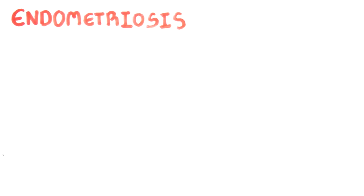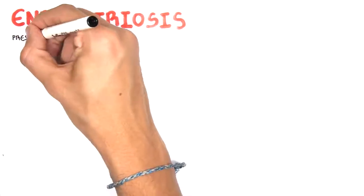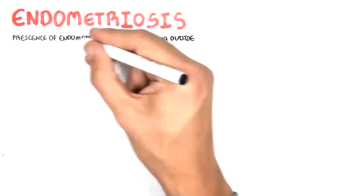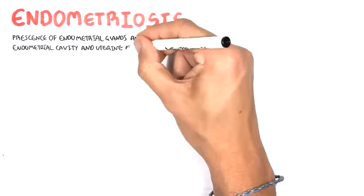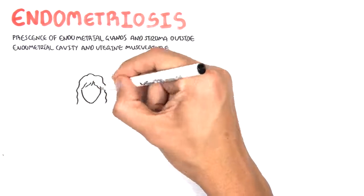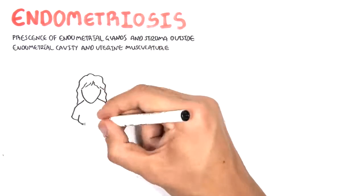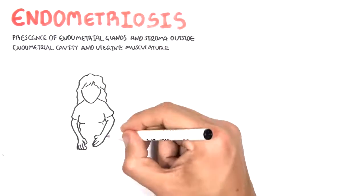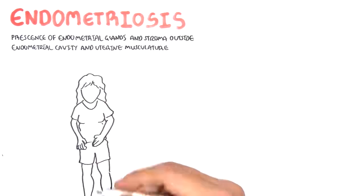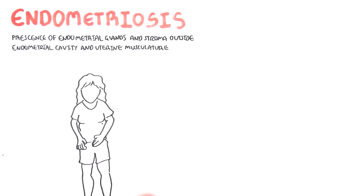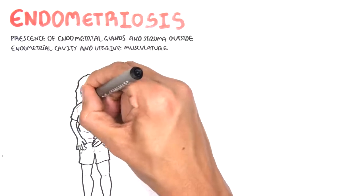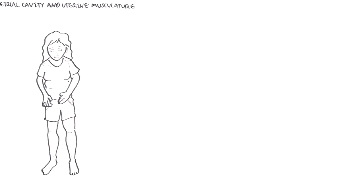Hello, in this video we're going to talk about endometriosis, which is the presence of endometrial glands and stroma outside the uterine cavity and the uterine musculature. Here is a lady with endometriosis, and during periods she gets terrible period pain and pelvic pain.